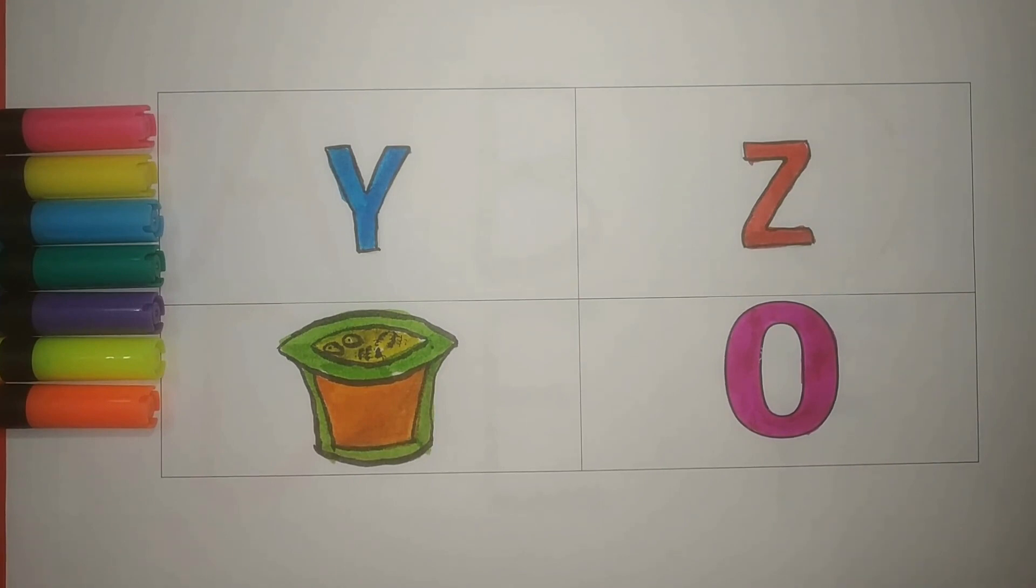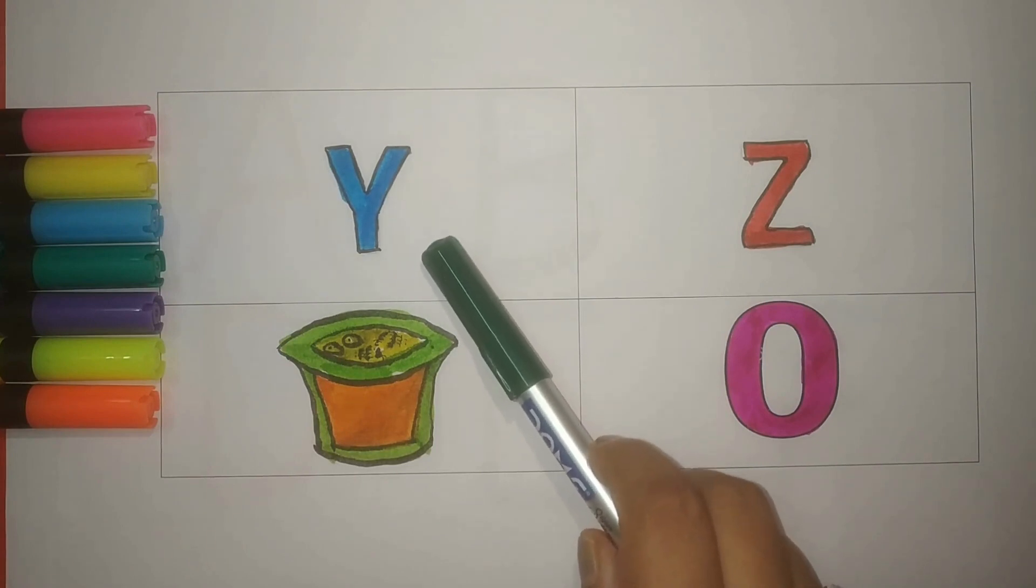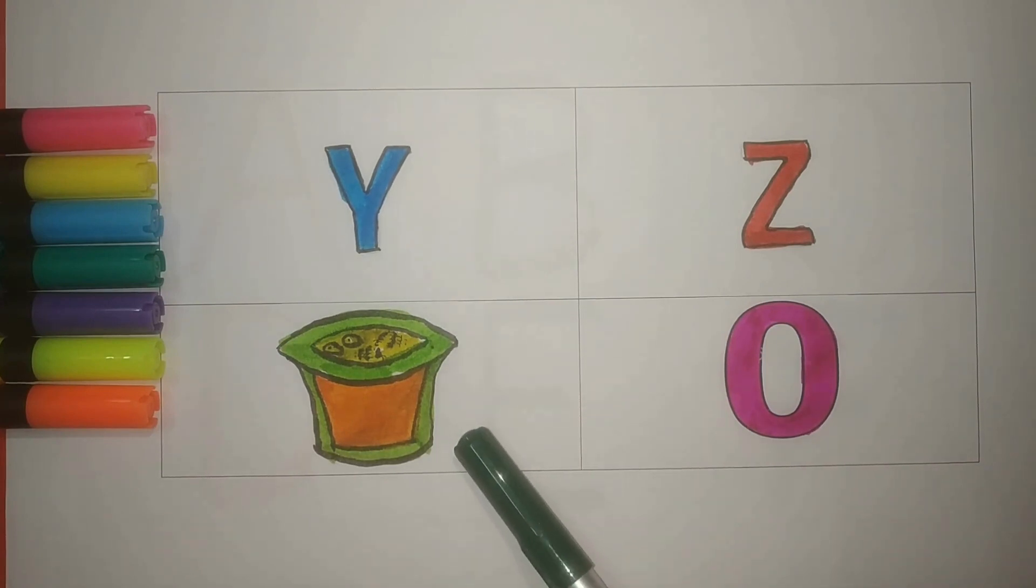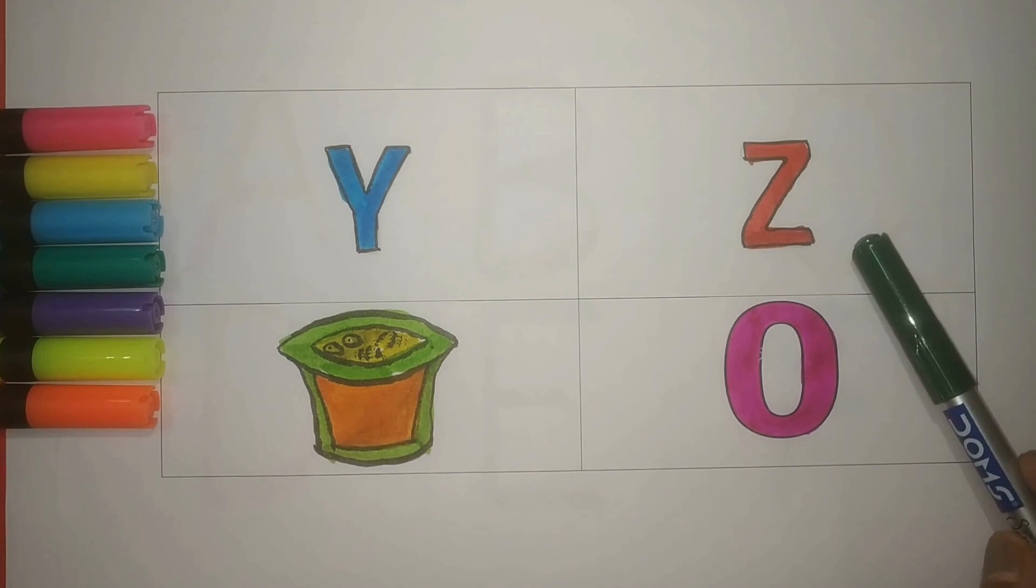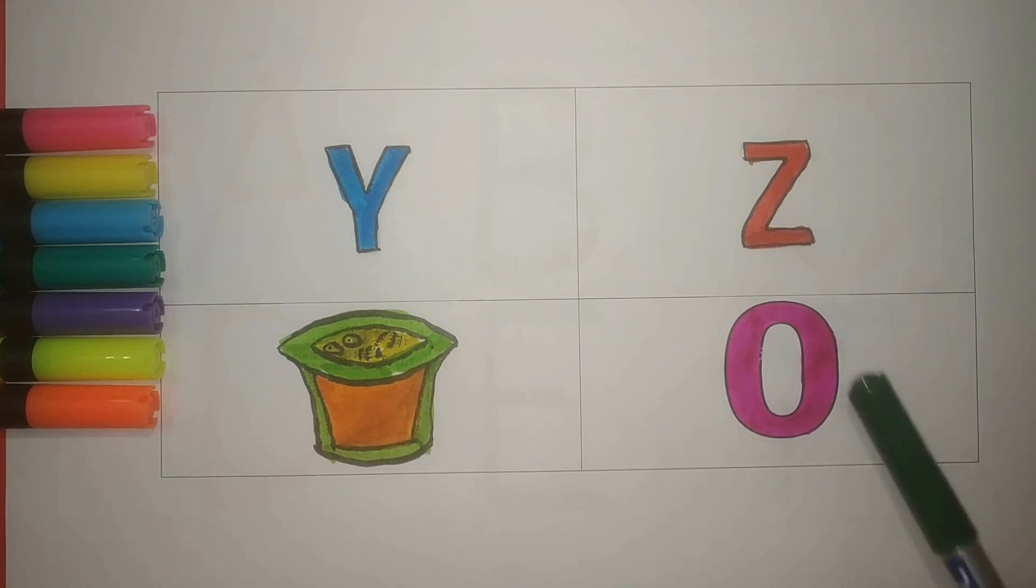Let's revise. Chalo pherse kertte hai. Blue color. Y, Y for yogurt. Red color. Z, Z for zero.